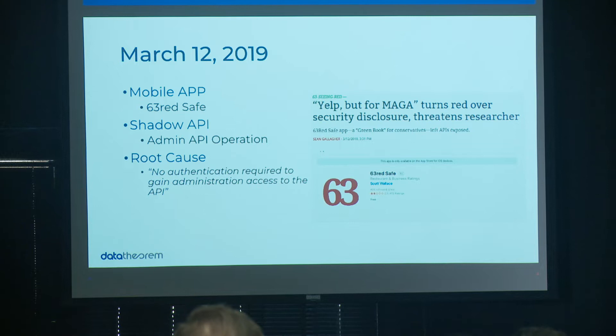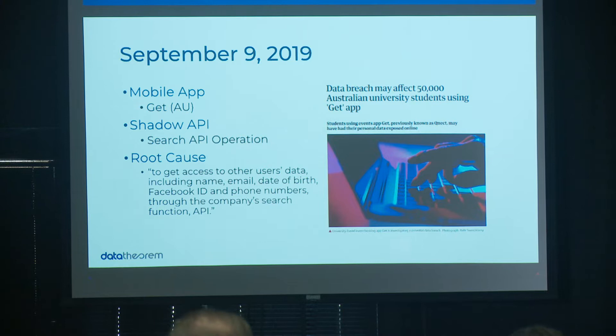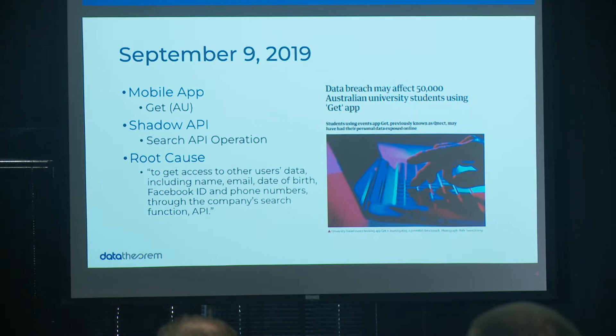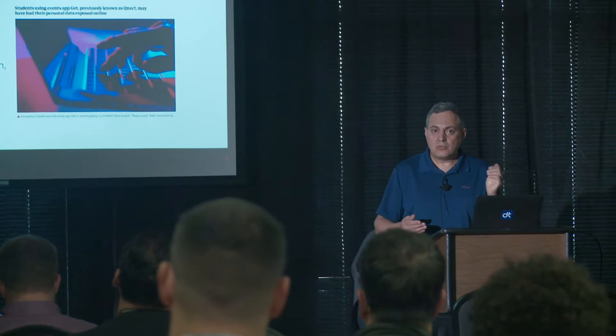That was March 2019. A few months later, another mobile app was hacked — an event planning app in Australia used by university students. Very similar attack: a search API embedded in the mobile app could be used to get information on any user. You could search for users starting with 'A' and get back a list of all matching users. There was no rate limiting on the API either, so with a quick script you had the entire user database at your disposal.